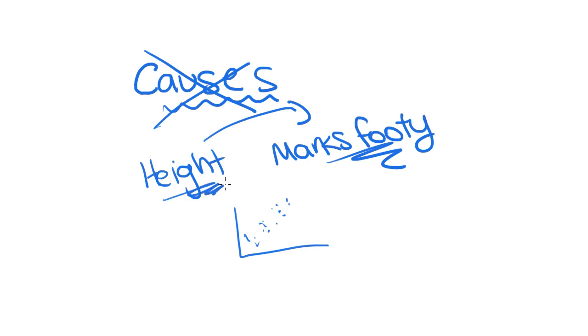So your height being tall doesn't cause you to be good at football, otherwise everyone would be good at taking marks. So you wouldn't want to take an r squared value of say 0.65 and say 65% of the variation in the amount of marks someone takes is caused by their height, because that's all kinds of wrong. I would just steer clear of that word altogether in an exam. There's an association, one can help explain the other, but it doesn't cause it directly.